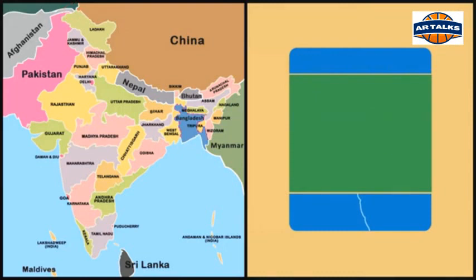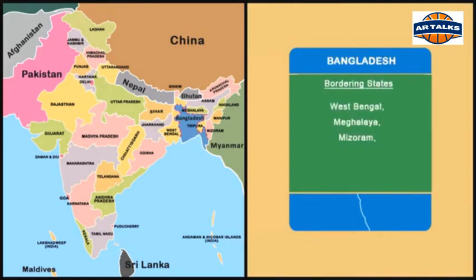The Indian states West Bengal, Meghalaya, Mizoram, Tripura and Assam share the border with Bangladesh. The border length is 4,096.7 km.